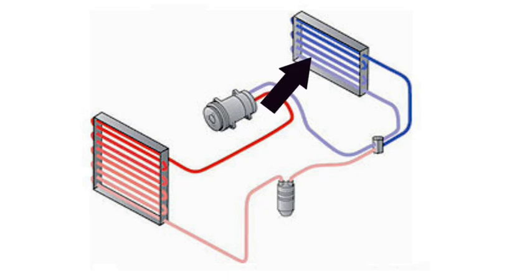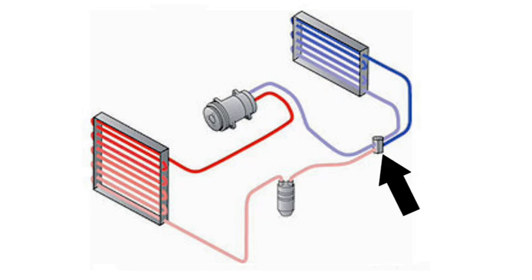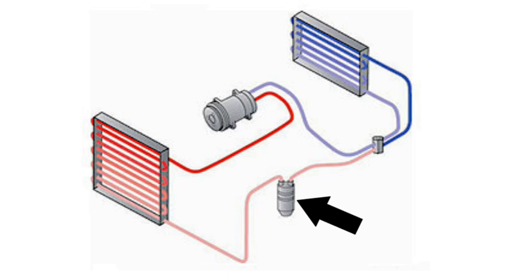Behind that, you have the evaporator, which is inside the passenger compartment — the low-pressure side of the system — basically where you get your cold from. This little guy down here at the bottom is a metering orifice. There are several different types of these, but basically this works off of the pressure-temperature relationship of the refrigerant. And then lastly, we have the receiver dryer, which removes moisture from the AC system. Moisture inside the AC system will compromise its efficiency, so they put this in here to take the moisture out.